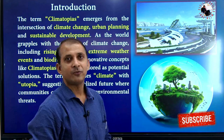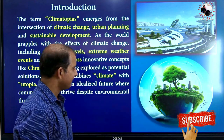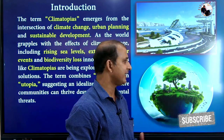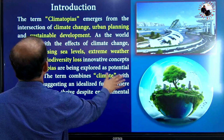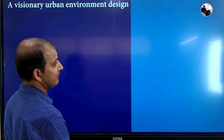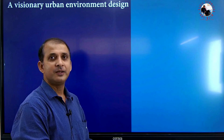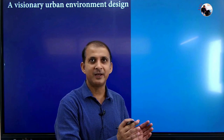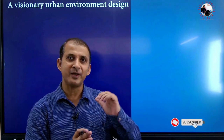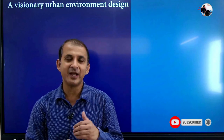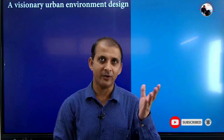Examples of climatopias include the floating city and green spaces in urban areas. Basically, it is a regional urban environment design — you design your urban areas such that you can deal with climate change and adapt to all things.